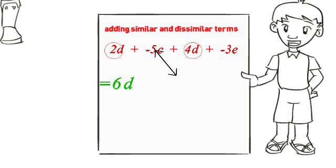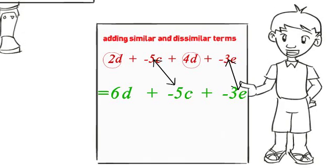Finally, because you cannot add the dissimilar terms, just write the resulting terms. Negative 5c and negative 3e.